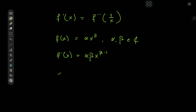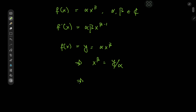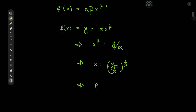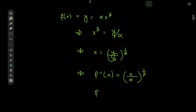For the inverse, we have f(x) = y = α·x^β. Solving for x in terms of y implies x^β = y/α, and further implies x = (y/α)^(1/β). So the inverse in terms of x is (x/α)^(1/β). We need the inverse at 1/x, so f⁻¹(1/x) = (1/α)·x^(−1/β) = α^(−1/β)·x^(−1/β).